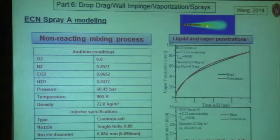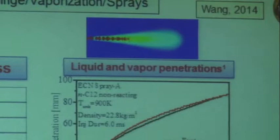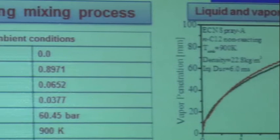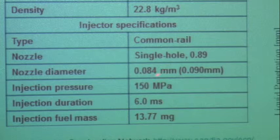For the non-reacting case, we're interested in liquid penetration length and vapor penetration length as a function of time, and we see very good agreement between experiments and simulation for both quantities — here running in pure nitrogen with no combustion. The conditions include a single-hole nozzle with diameter 0.084 mm (84–90 microns) and injection pressure of 150 MPa, taken from the Sandia ECN website.